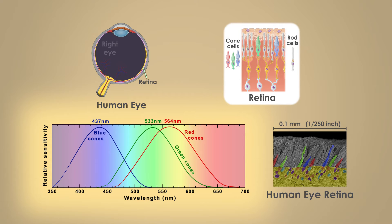The three variants are labeled red, green, and blue. In both an eye and a camera, the purpose of this design is to determine the color of the incoming light, by comparing how much light was captured by each of the three variants.